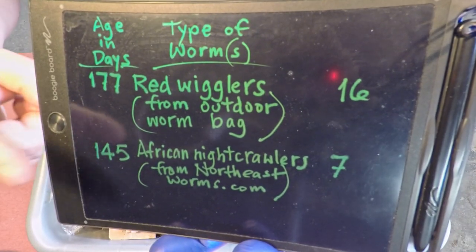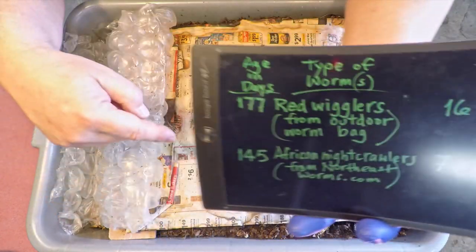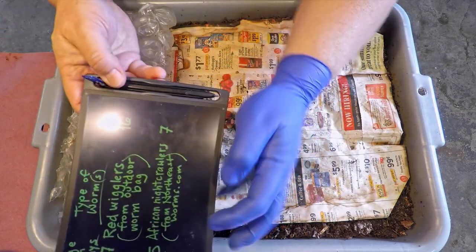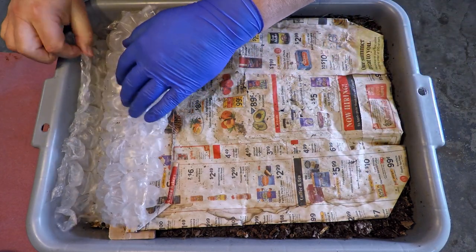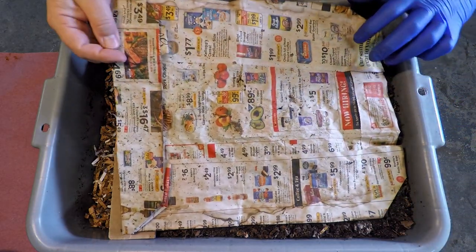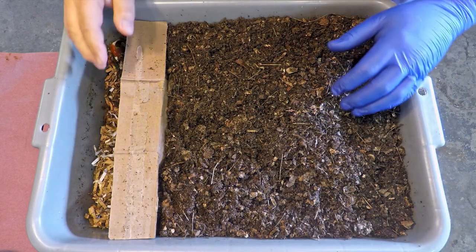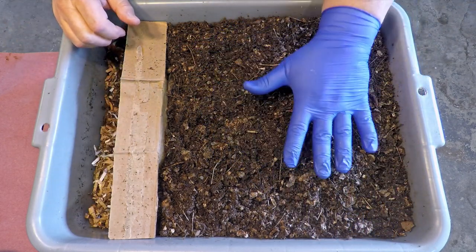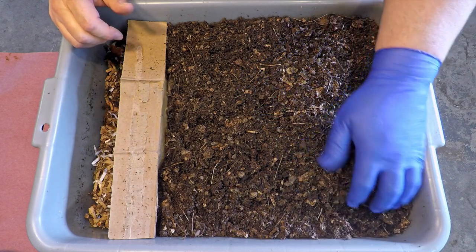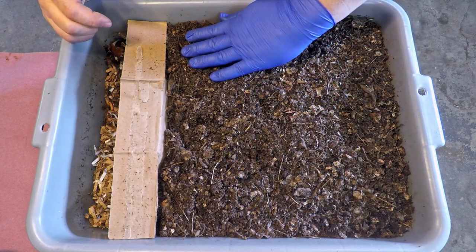We'll begin with the younger of the two bins, the one that's only been in migration mode for a week. These are African nightcrawlers I received from NortheastWorms.com. The unusual thing about this system is that I removed all the adult worms over the course of four separate extractions to see if I could remove every last one. I know I came close but there's no way I removed them all. Notice there's bubble wrap plastic on one side and just a single sheet of newspaper on the other side.